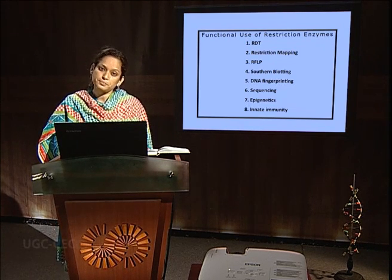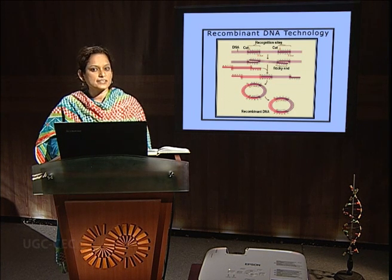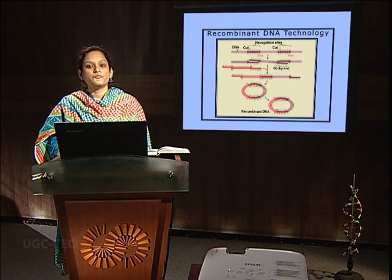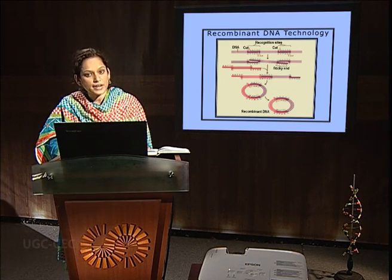Restriction enzymes are the foremost application in recombinant DNA technology. As the name suggests, it helps in creating recombinant DNA, which is a mixture of two different kinds of DNA. With the help of restriction enzymes, foreign genes can be cloned or isolated from any organism. If two DNAs from two different sources are cleaved with the same restriction enzyme, it generates an identical pair of sticky ends, which then recombines with the help of hydrogen bonds to form a recombinant DNA.